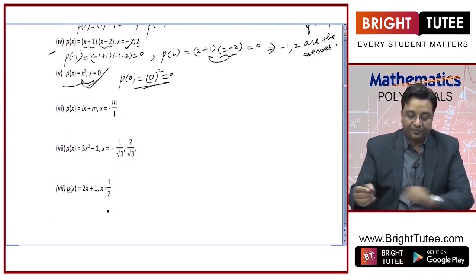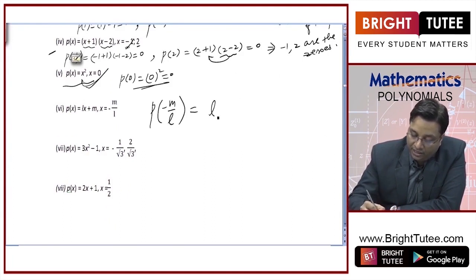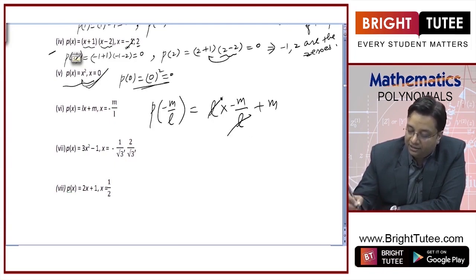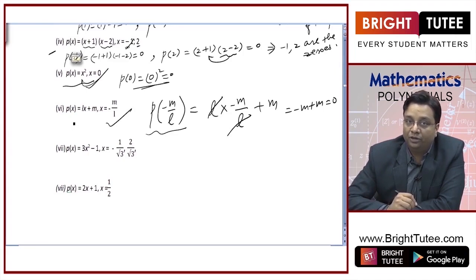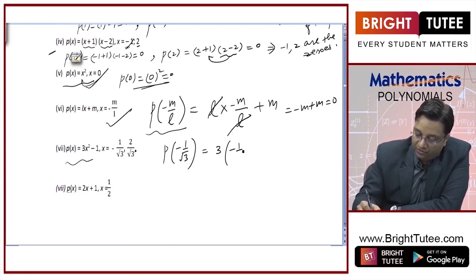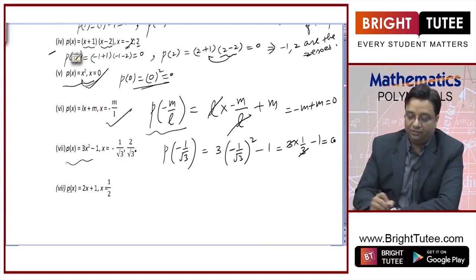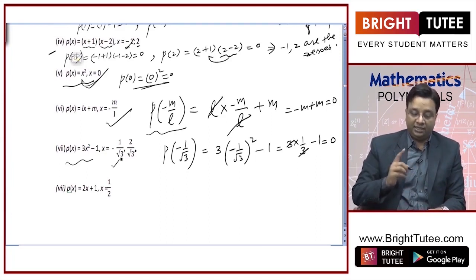For p of x equal to Lx plus m, if I replace x by minus m by L, p of minus m by L is equal to 0. So yes, it is a zero of the given polynomial. Similarly, in this case, p of minus 1 by root 3: replace x by negative 1 by root 3 — 3 into minus 1 by root 3 squared minus 1. This equals 3 into 1 by 3 minus 1, which is 1 minus 1, equal to 0. Hence negative 1 by root 3 is a zero of this polynomial.